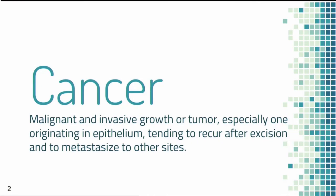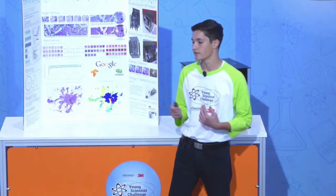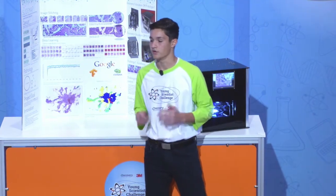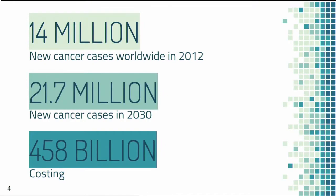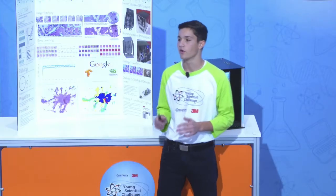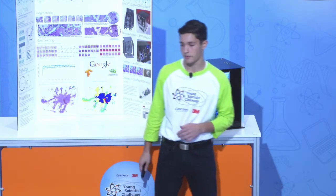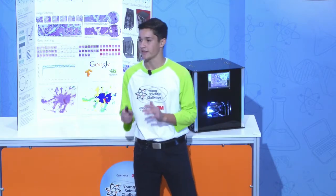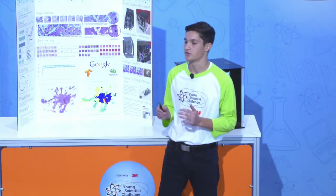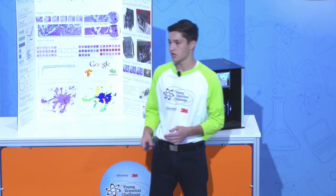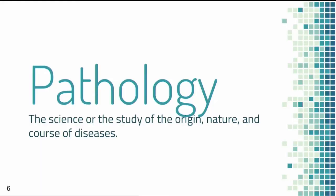Cancer is an uncontrolled rapid growth of cells that forms a tumor. There were 14 million new cancer cases worldwide in 2012 and this is expected to rise to 21.7 million new cancer cases by 2030, costing a total of $458 billion. Five-year survival rates are highly varied between countries and in Asia, 27% of cancer patients die within the first year and 45% have financial catastrophe. Pathology, or more specifically histopathology, is a study of how tissue changes as a result of a disease such as cancer.